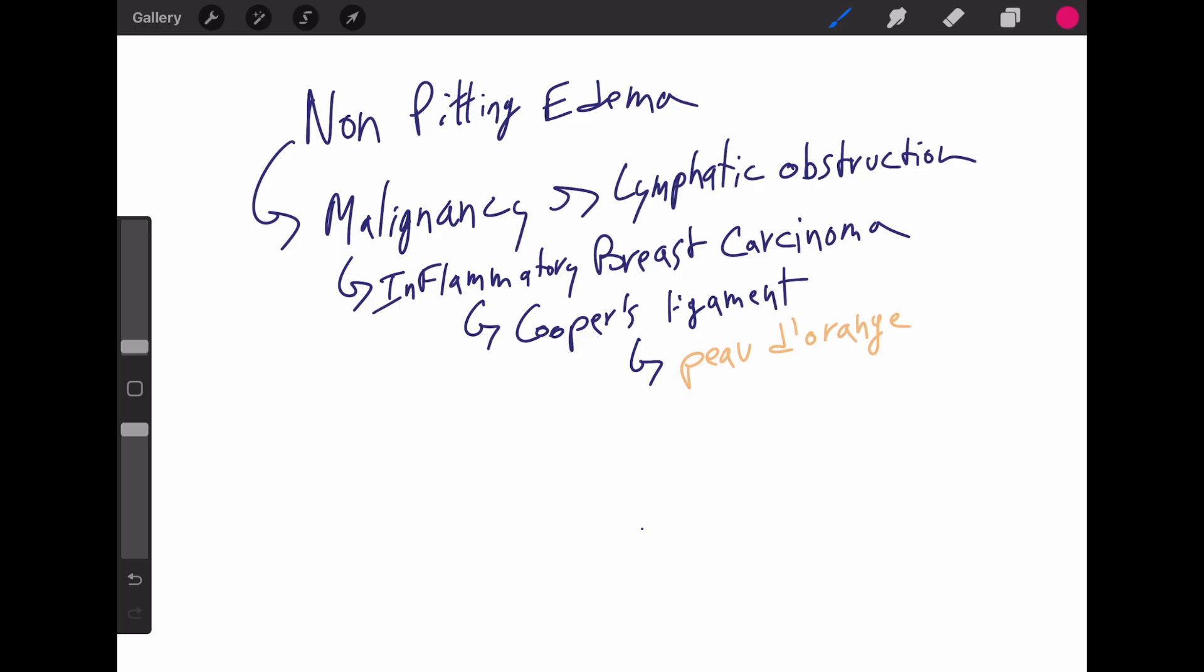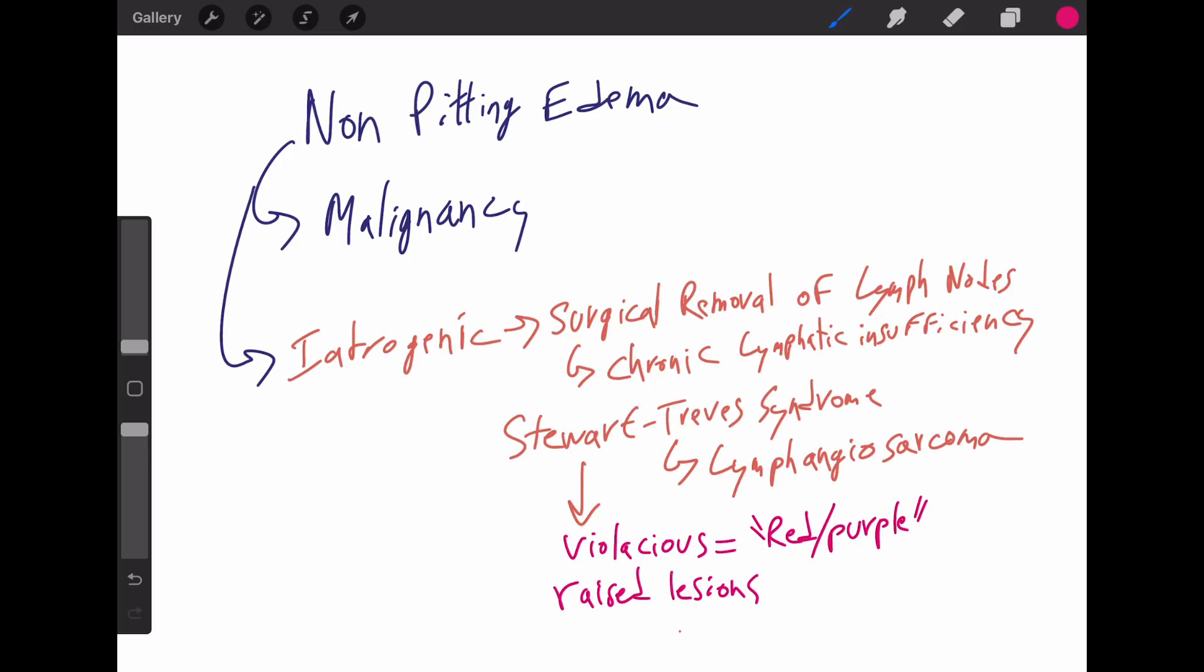A common cause of non-pitting edema can be malignancy, particularly when you have lymphatic obstruction. For example, inflammatory breast carcinoma can involve the Cooper's ligament, which tether the skin and give dimples or peau d'orange appearance. That literally results in the breast tissue looking like the skin of an orange. Other causes of lymphatic obstruction include iatrogenic effect, such as surgical removal of a lymph node. During mastectomy can lead to chronic lymphatic insufficiency. This, in turn, can result in a condition called Stewart-Treves syndrome. It's rare, but it's important in the development of lymphangiosarcoma of the affected limb. This can present years after surgery with violaceous, purple slash red, raised lesion on the arm, commonly in areas like the antecubital fossa. Even if you're not familiar with Stewart-Treves syndrome, you can kind of reason your way there because if they mention chronic lymphatic insufficiency followed by vascular type lesions, the answer you could get to would be lymphangiosarcoma.